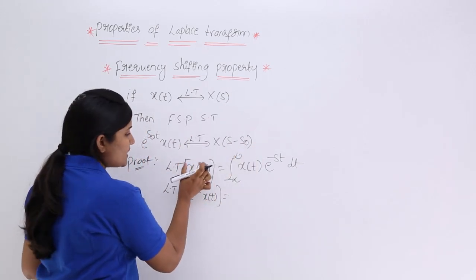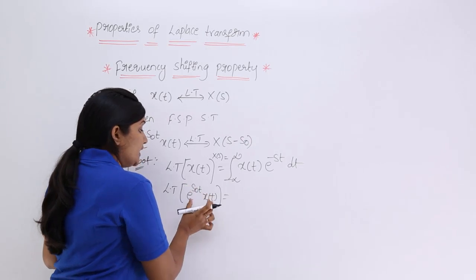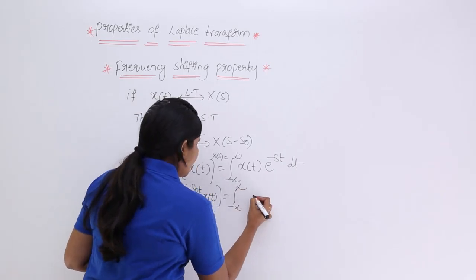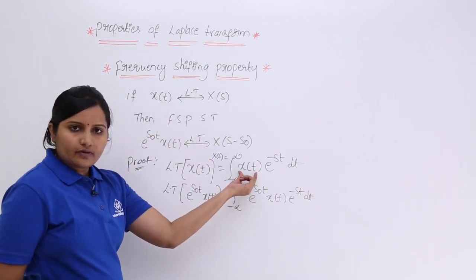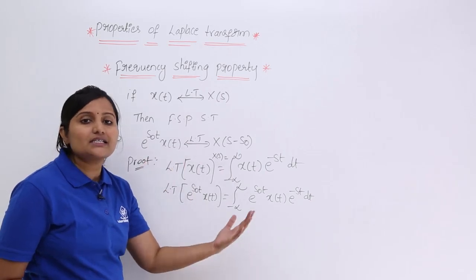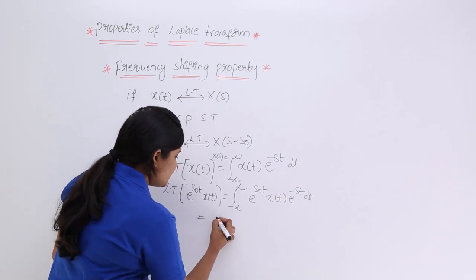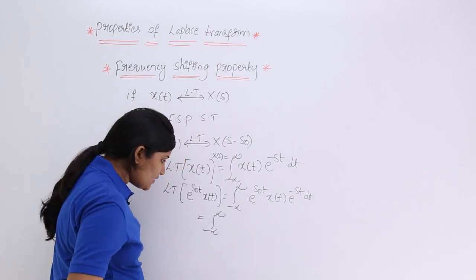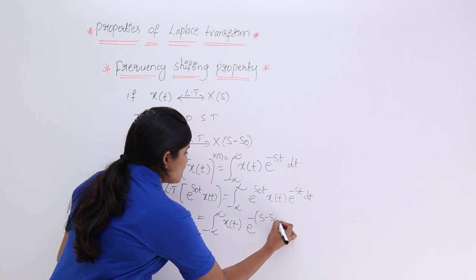Using the reference equation — the Laplace transform of x(t) equals X(s) — I now replace x(t) with e^(s₀t)·x(t) in the integral. This gives the integral of e^(s₀t)·x(t)·e^(-st) dt. Since both terms share t in the exponent, I take it common and rewrite as x(t)·e^(-(s - s₀)t) dt.